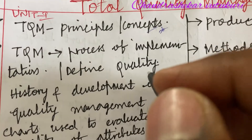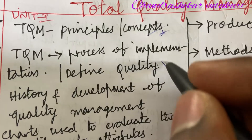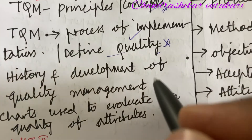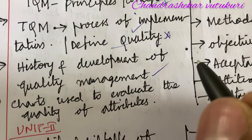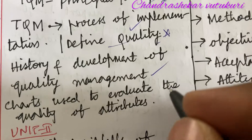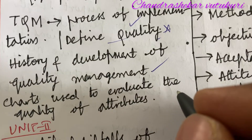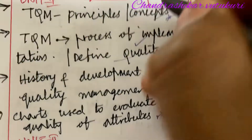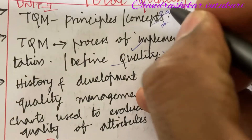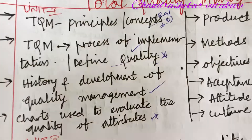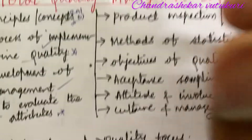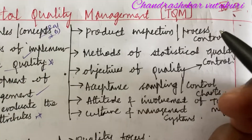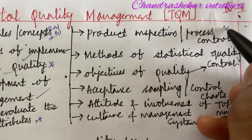TQM principles and concepts is a short question. TQM process of implementation and defining quality may be a short as well as a long question. History and development of quality management, and the charts used to evaluate the quality of attributes — explain this term. From this we can expect 2A as well as 2B.